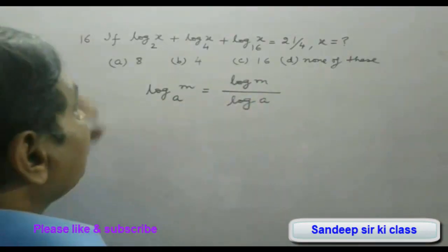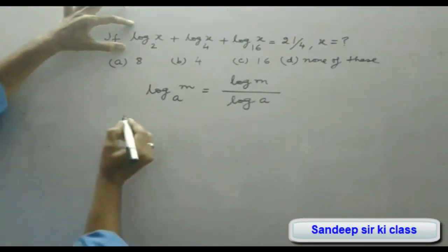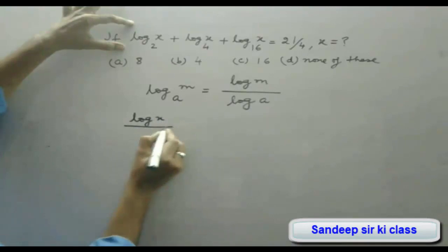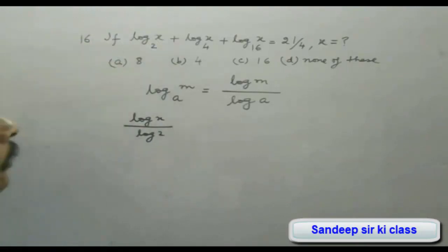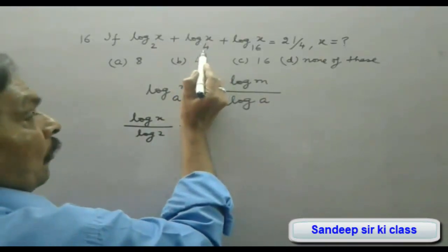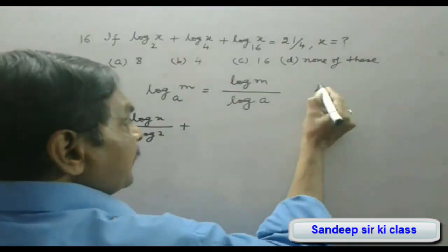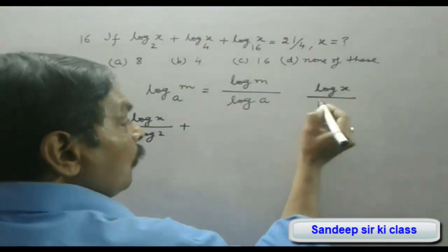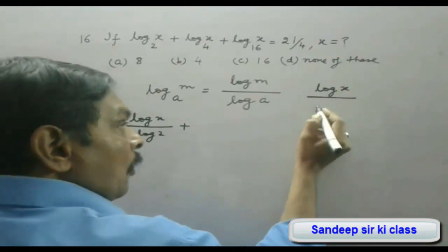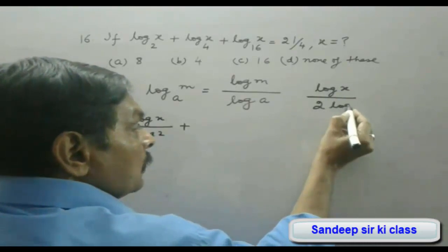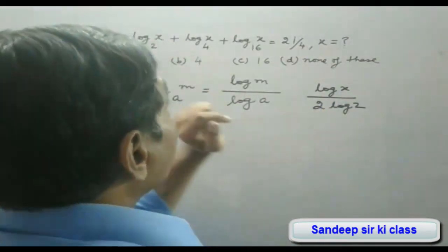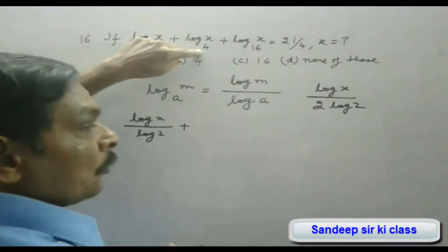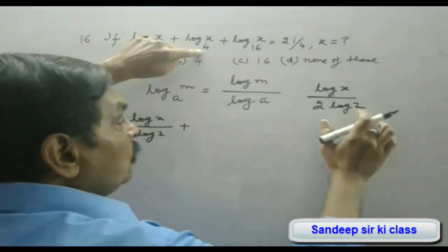With this formula, the first term can be written as log x upon log 2. The second term is log x upon log 4. Since log 4 equals log 2² = 2 log 2, the second term becomes log x upon 2 log 2.